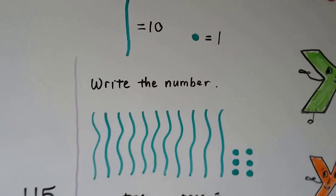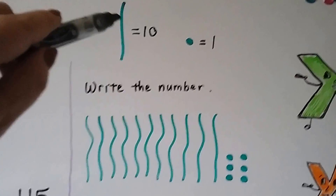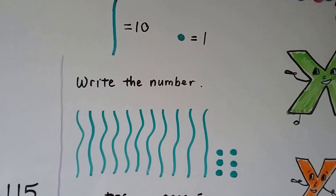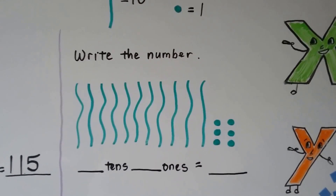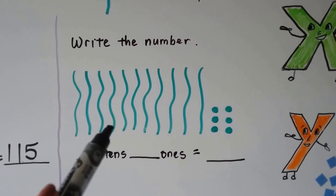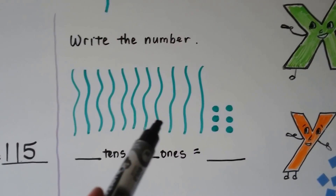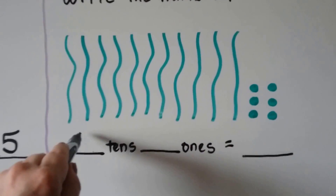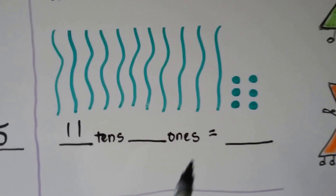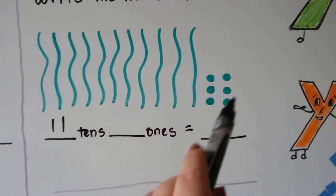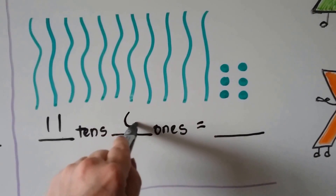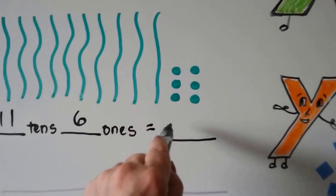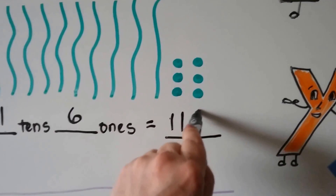It says to write the number, and it's telling us that each of these green squiggly lines is a 10 and each of these green dots is a 1. How many tens do we have? 1, 2, 3, 4, 5, 6, 7, 8, 9, 10, 11 tens, and 6 ones. What number does that make? We can write the 11 tens and 6 ones.